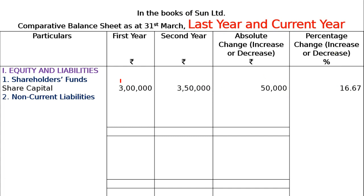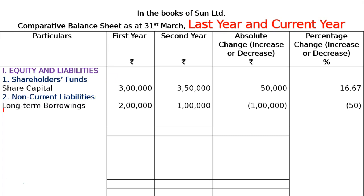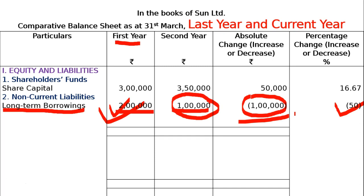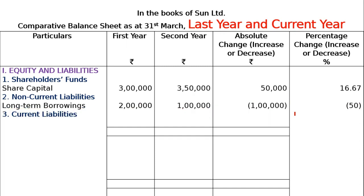Next, Non-Current Liabilities. Under Non-Current Liabilities comes Long-Term Borrowings. The first year value is Rs. 2 lakhs and the second year value is Rs. 1 lakh — so there is a decrease. Calculation: 1 lakh minus 2 lakh = minus 1 lakh. Percentage change = minus 1 lakh divided by 2 lakh into 100 = minus 50%. Both the absolute change and percentage change are in minus, meaning a decrease.